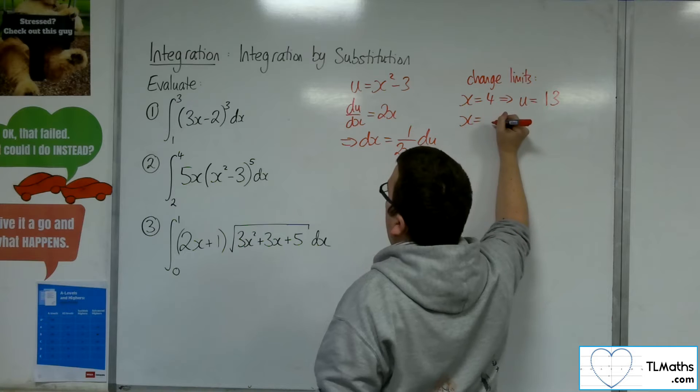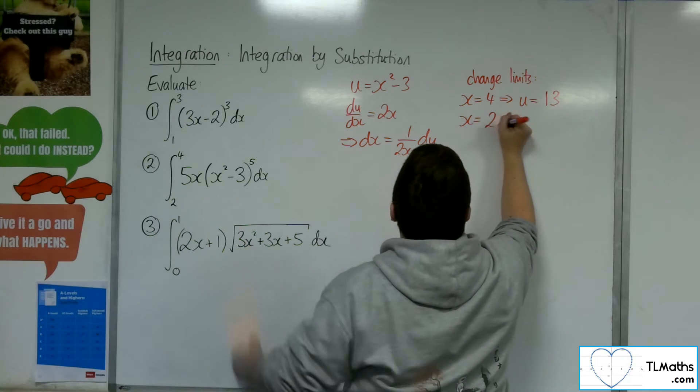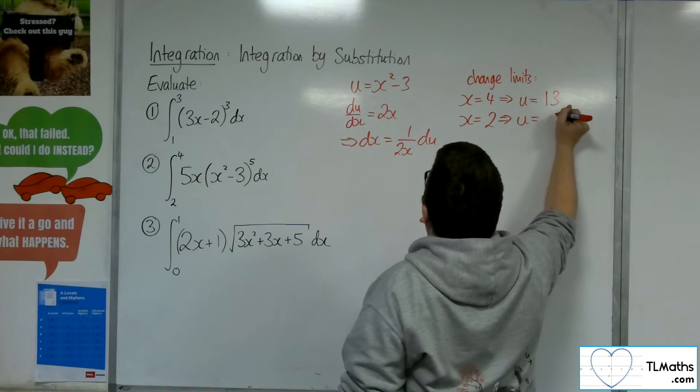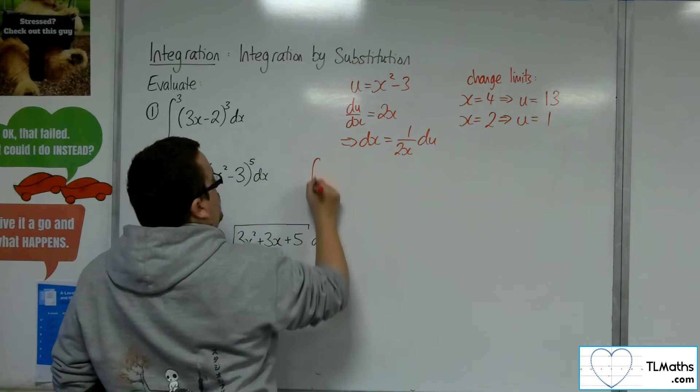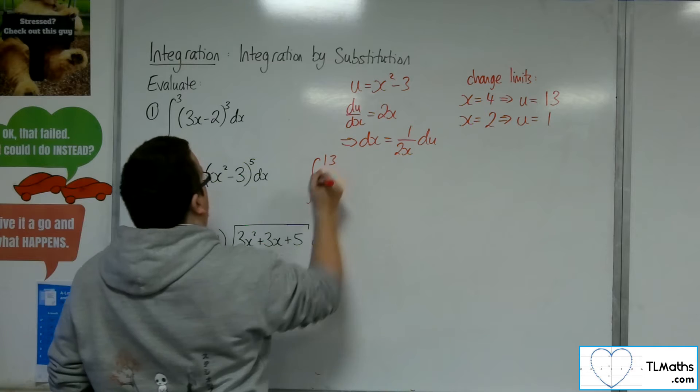And when x is 2, u will be 2 squared take away 3, so 1. So we're integrating between 1 and 13.